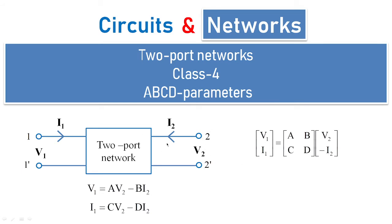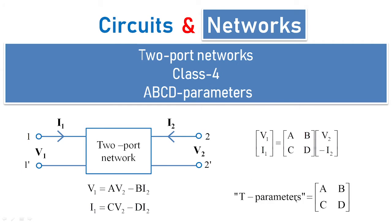The output voltage V2 is measured across the secondary circuit at port 2-2'. The current I2 flows in the clockwise direction, which is in opposition to I1 — that is why it appears with a minus sign. This is what is known as transmission line parameters or T parameters, given by ABCD.